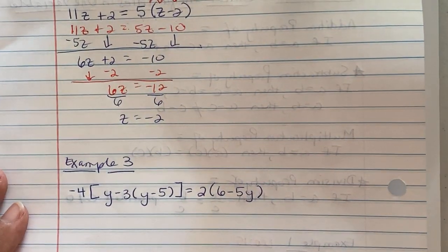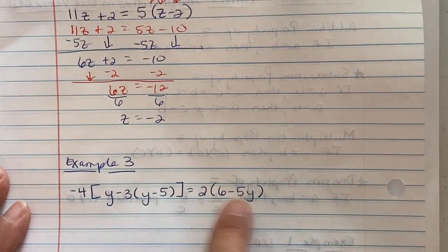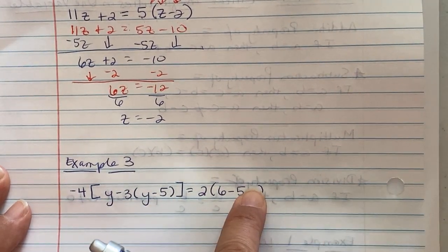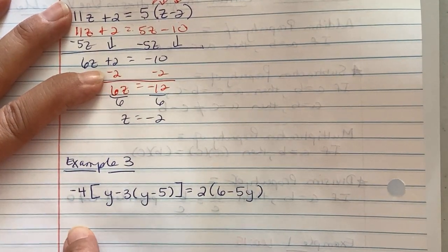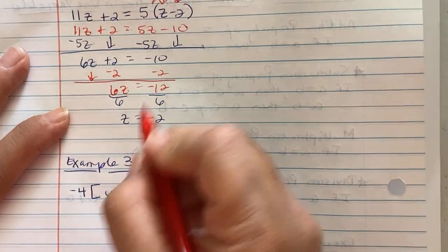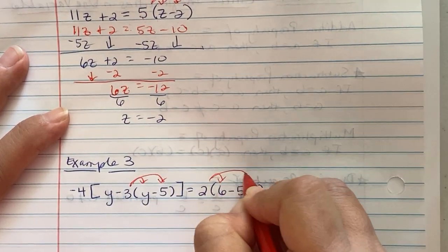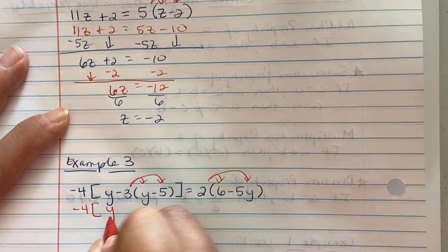Example three. Notice in this problem there's brackets and then parentheses contained inside the bracket. You're going to work from the inside out. First thing we're going to do is we're going to distribute that negative 3 in here and then the 2 on the right side. So negative 4 slides down, y slides down, now we come negative 3y, positive 15.